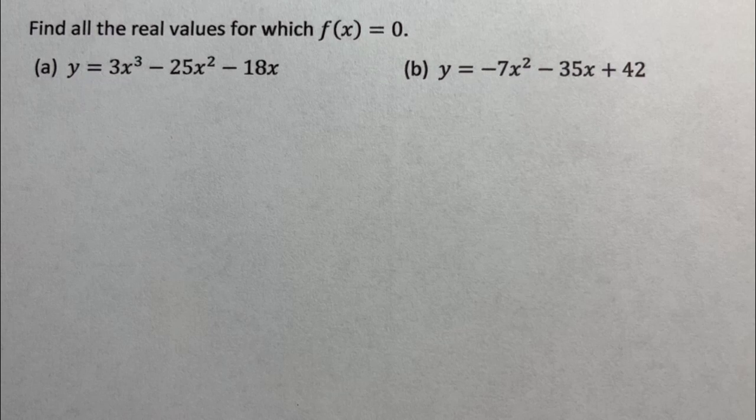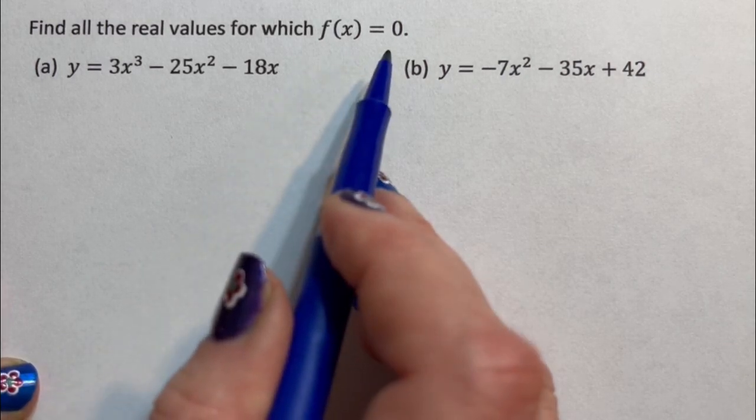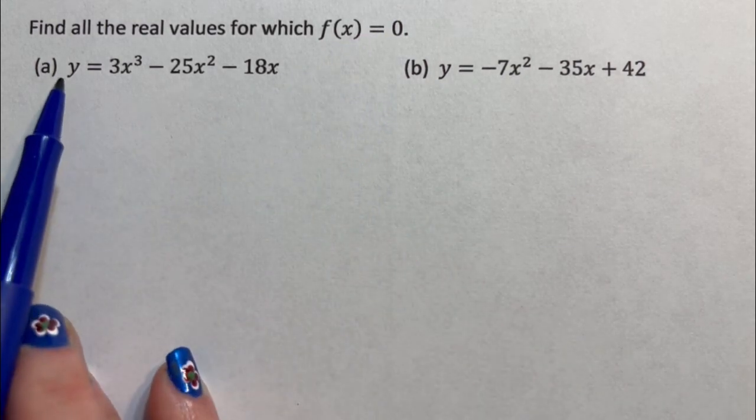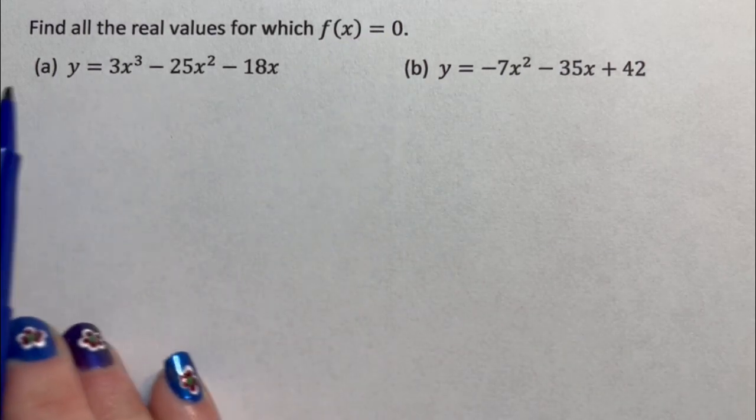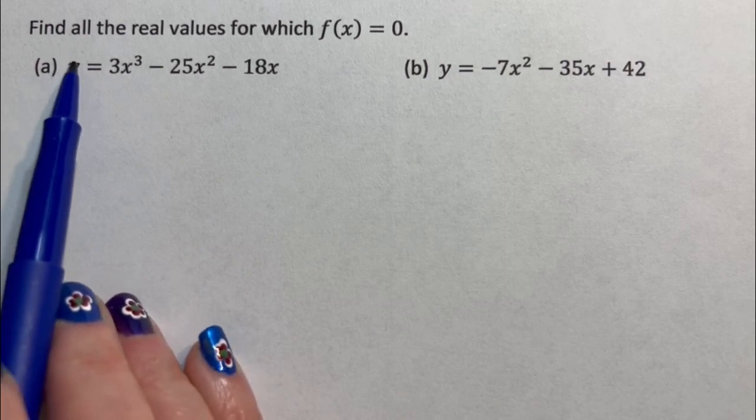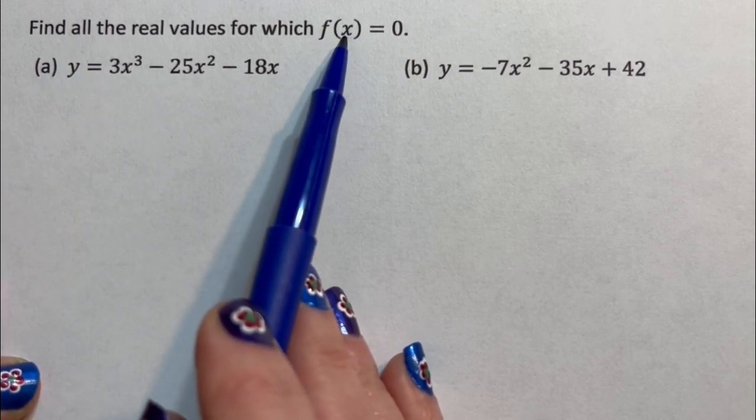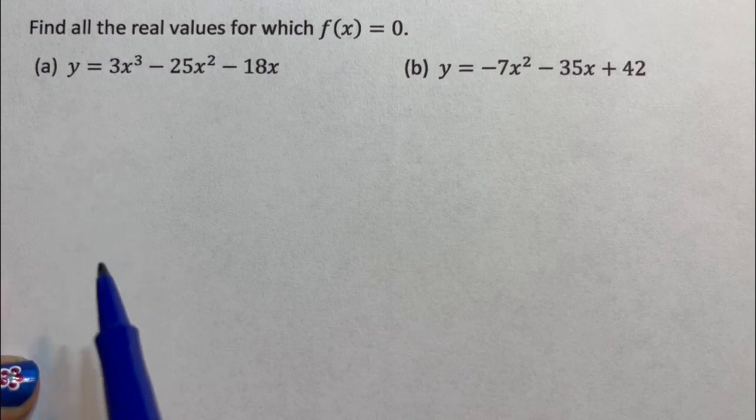Hi, welcome to RoarMath. Today I'm doing a series of videos on functions. In this video, it says find all the real values for which f(x) equals zero. Notice that both of my examples say y equal, and that's because y and f(x) are two ways of saying the same thing.